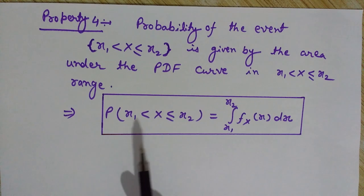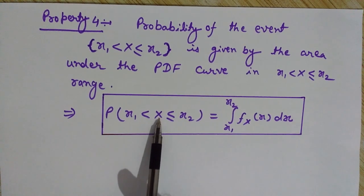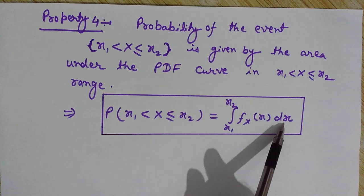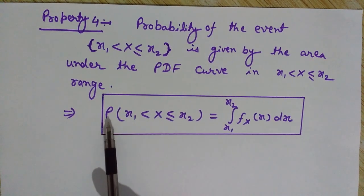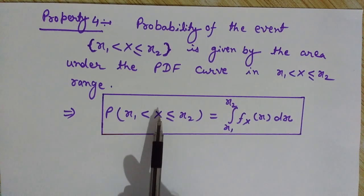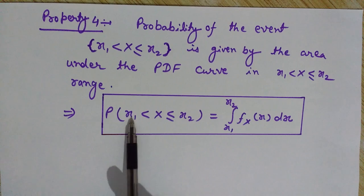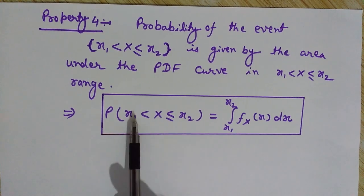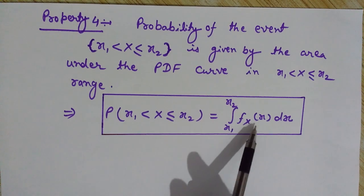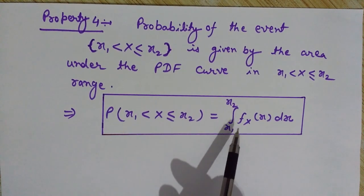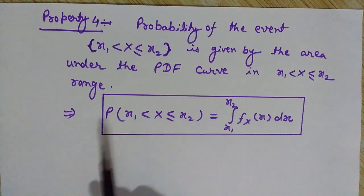Property number 4: The probability that the random variable X lies between x1 and x2 is given by the integral from x1 to x2 of f(x) dx. If you want to find the probability that the random variable X is between two of its values x1 and x2, you simply integrate the probability density function from x1 to x2 with respect to x.